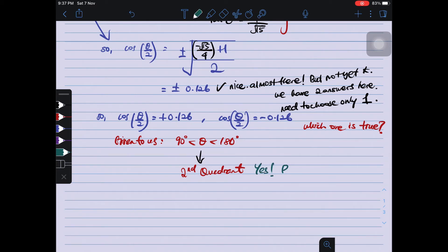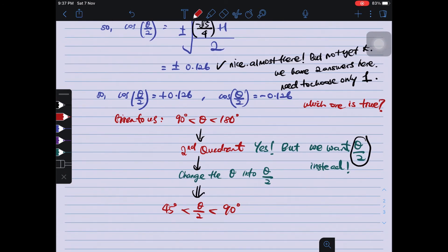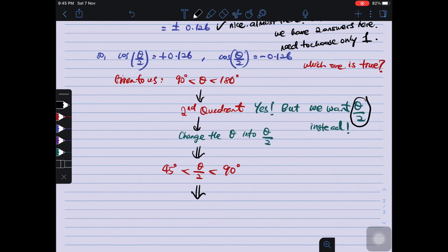Tetapi... We have θ/2. We are asked to find θ/2, not θ. Jadi, we need to change from θ. Change it to θ/2. Therefore, I change my θ into θ/2. Therefore, I got 45 degree to 90 degree. Which is at the first quadrant instead.